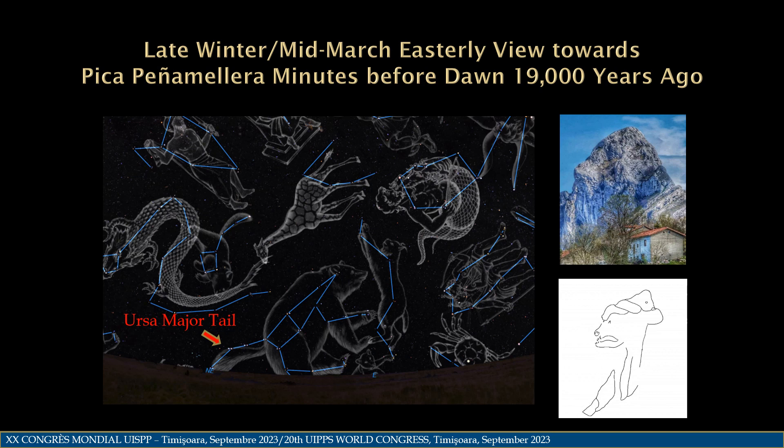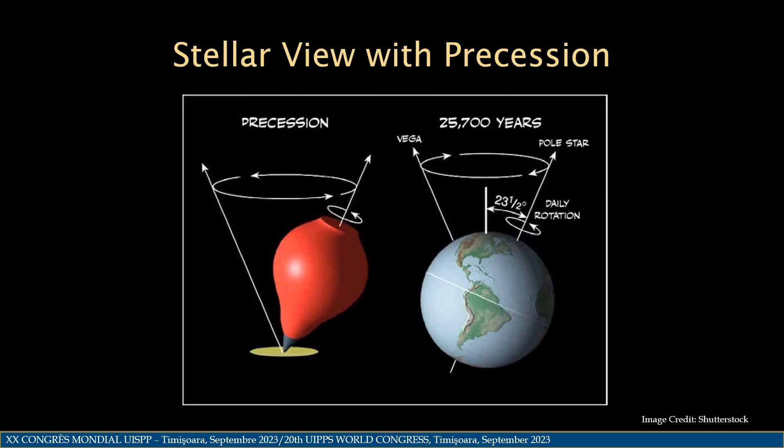One group of stars matching a character depicted in an Ice Age cave with a landscape doesn't make a hypothesis — examples from other Ice Age characters are needed. First, to test whether Paleolithic artists could have seen Ursa Major, we must consider an astronomical phenomenon called precession, whereby the Earth wobbles like a top over a 25,700-year cycle, and one's ability to see stars from any one place on Earth changes over the cycle.